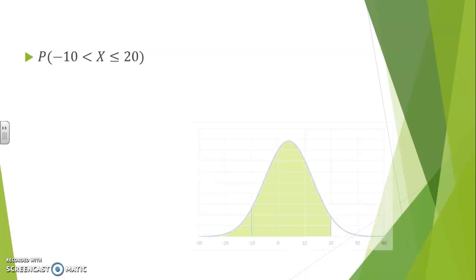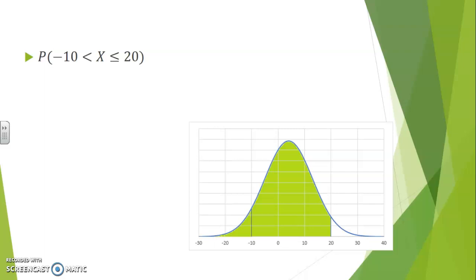Areas between two bounds will force us to visualize how much area is left of 20 in this example, from which we want to exclude the area that is left of minus 10, leaving only the area between them.